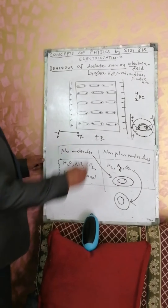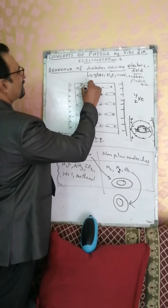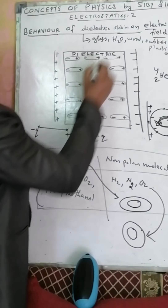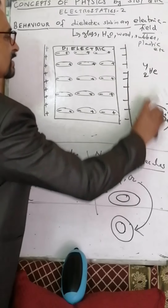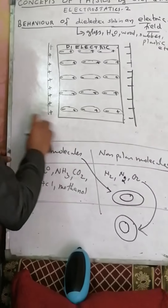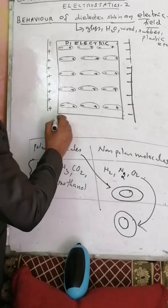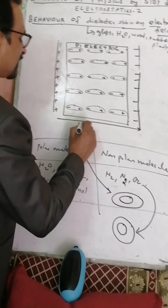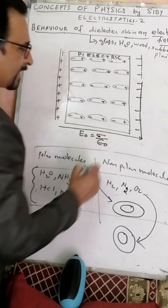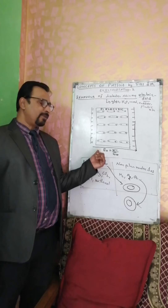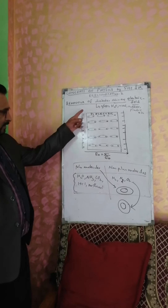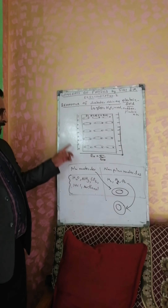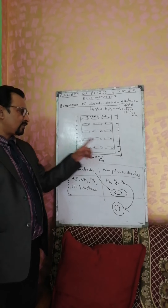Now consider a dielectric slab located between the positive plate and negative plate of a capacitor. The electric field between the plates of a capacitor is uniform: sigma by epsilon naught. The direction of that electric field is from the positive plate to the negative plate — a non-zero uniform electric field exists between the plates of a charged capacitor.